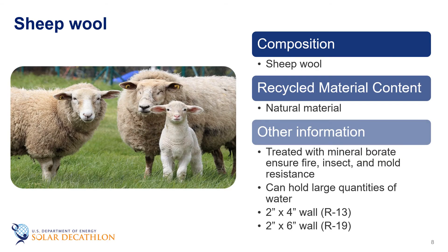For use as insulation, sheep's wool is also treated with borate to resist pests, fire, and mold. It can hold large quantities of water, which is an advantage for use in some walls, but repeated wetting and drying can leach out the borate. Sheep's wool batts for a 2x4 wall and 2x6 wall offer an R-13 and R-19 value respectively.